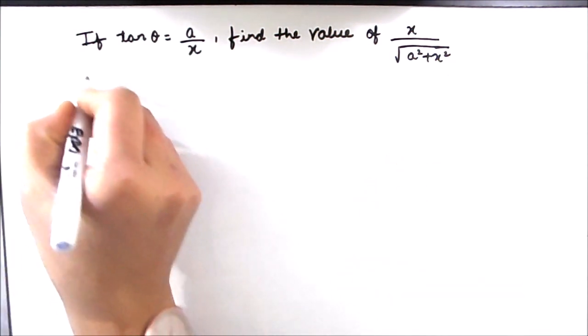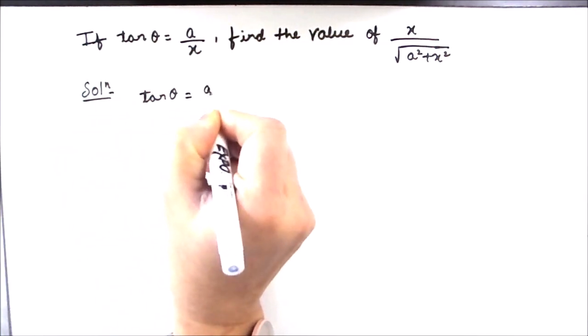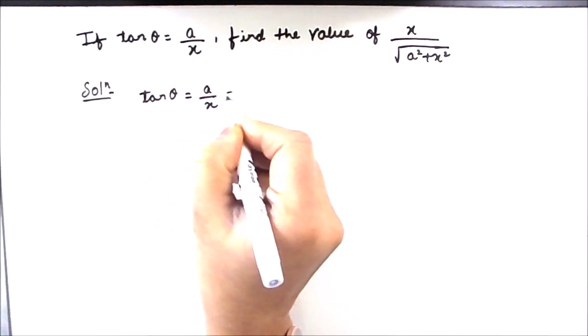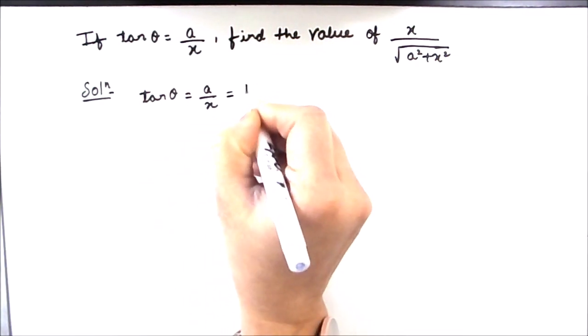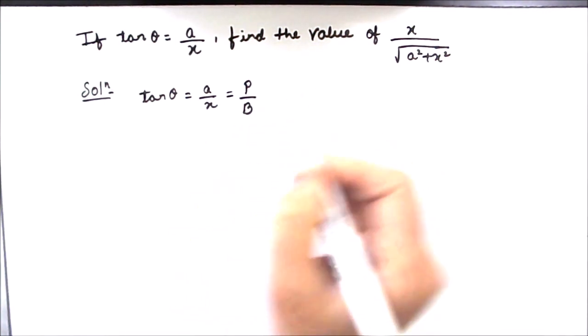So let's start the solution. We have been given tan theta is equal to a by x, and we know that tan theta is also equal to perpendicular divided by base. Let us make a right triangle.